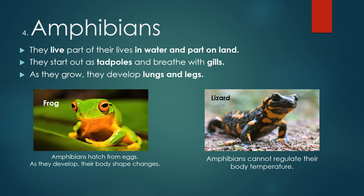Amphibians. They live part of their lives in water and part on land. They start out as tadpoles and breathe with gills. As they grow, they develop lungs and legs. Frogs are amphibians — they hatch from eggs, and as they develop, their body shape changes.